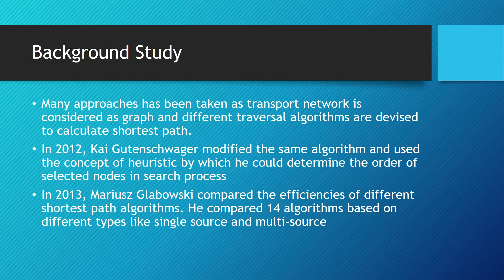In 2012, Kai Guntinsker modified the same algorithm and used the concept of heuristics, by which he could determine the order of selected nodes and the search process. While in 2013, Marius compared the efficiency of different shortest path algorithms — he compared 14 algorithms based on different types of single source and multi source.